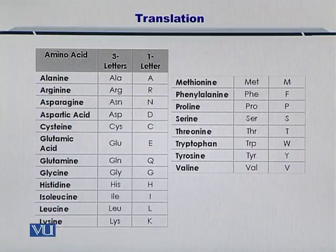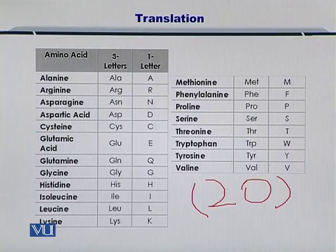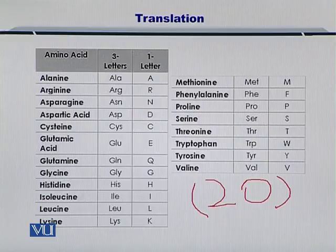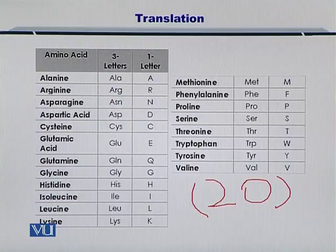Various amino acids can be encoded in this process. These amino acids include alanine, arginine, asparagine, aspartic acid, cysteine, glutamic acid, glutamine, glycine, histidine, isoleucine, leucine, lysine, methionine, phenylalanine, proline, serine, threonine, tryptophan, tyrosine, and valine. So these 20 amino acids can be encoded by an mRNA molecule.